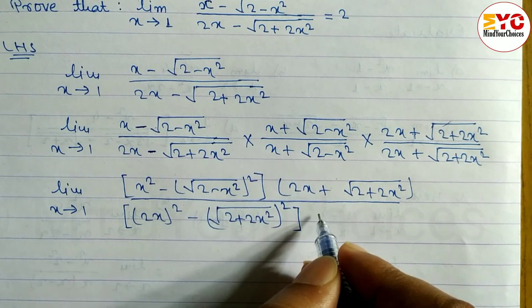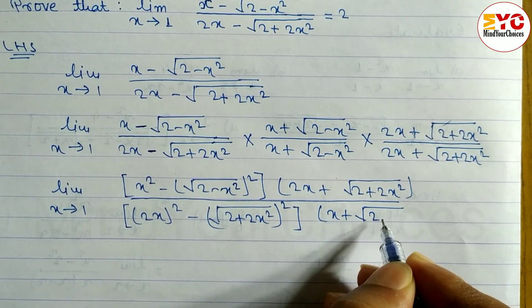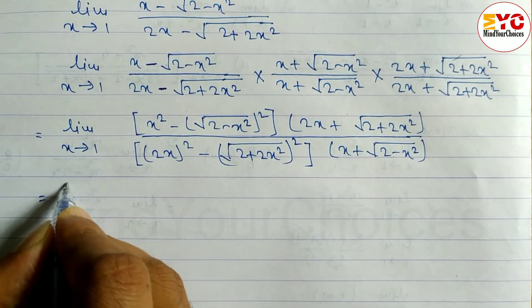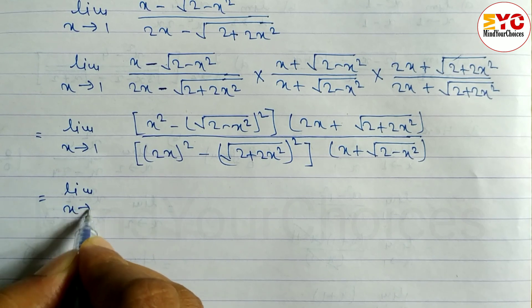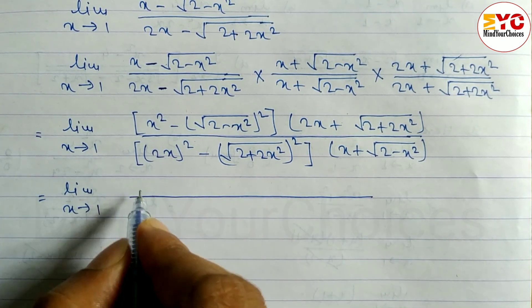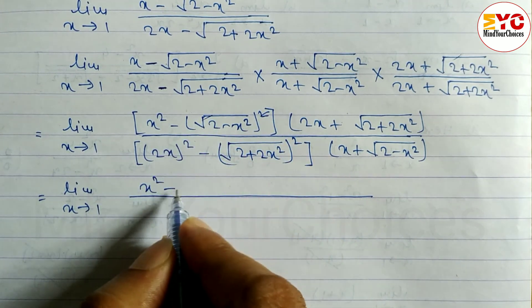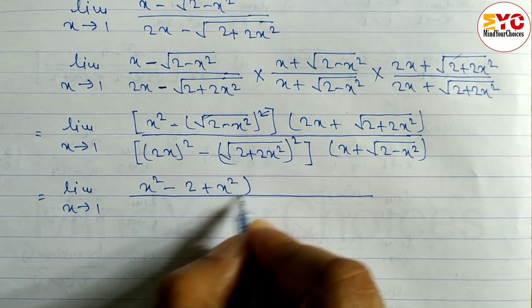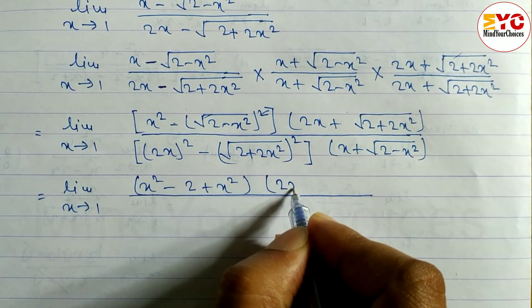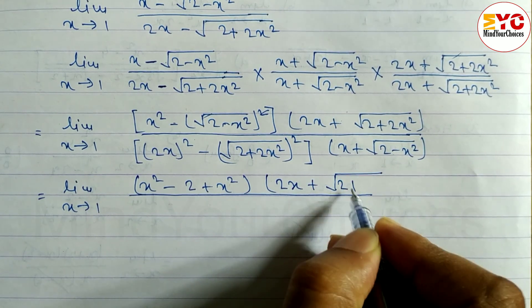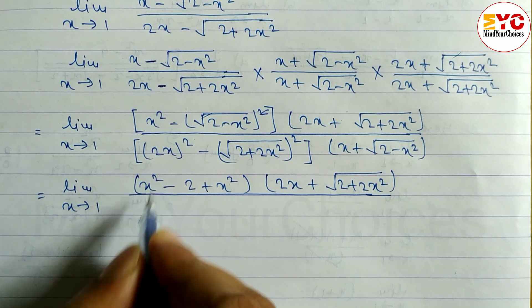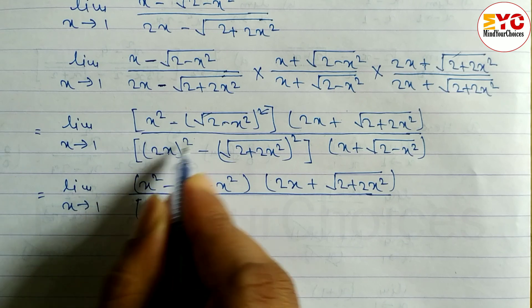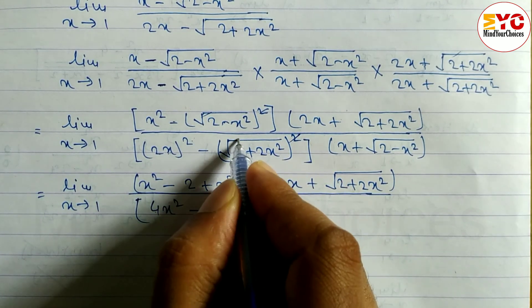Taking limit x tends to 1, the square and root cancel in the numerator. So what remains is: numerator becomes x² minus (2 - x²) which gives 2x² - 2. The denominator squared term: (2x)² = 4x², and [√(2 + 2x²)]² = 2 + 2x², so denominator becomes 4x² minus (2 + 2x²) which gives 2x² - 2.